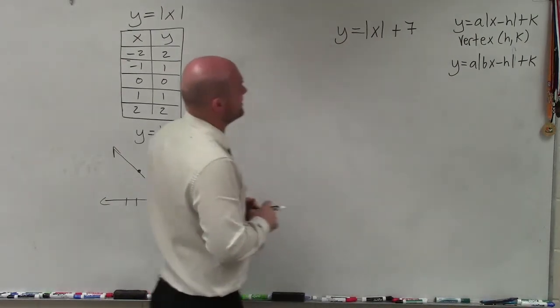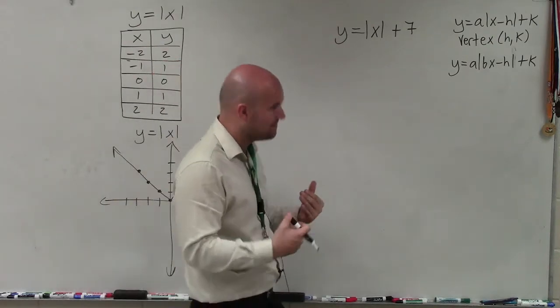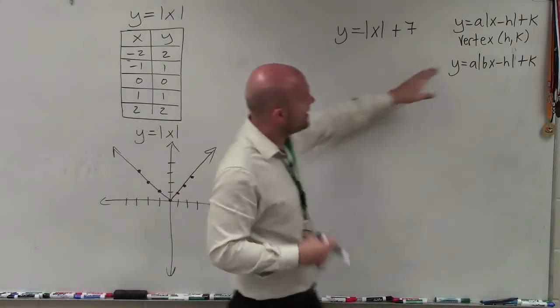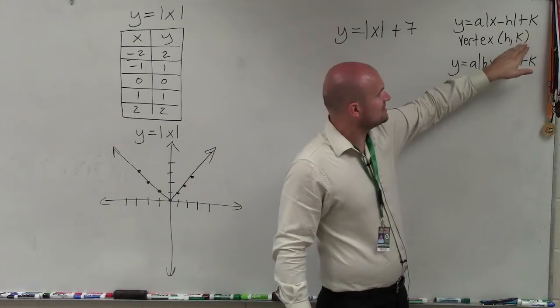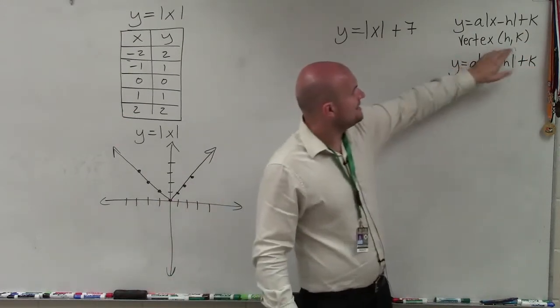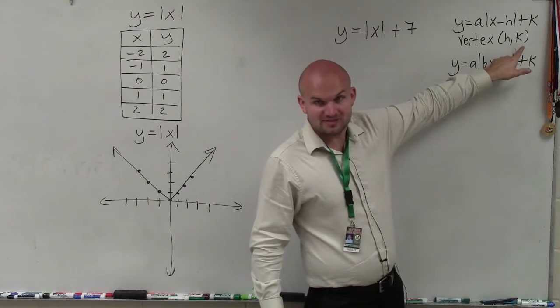So in this equation, what I have is y equals the absolute value of x plus 7. Now notice that when we have that number outside k, what that does is it takes our vertex, which is previously at (0, 0), and now it shifts it up to a y value of 7.